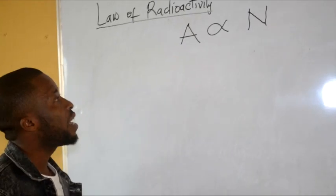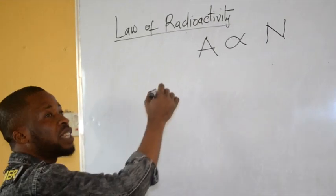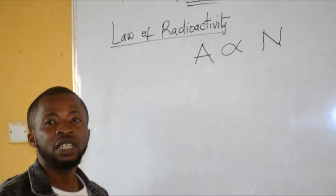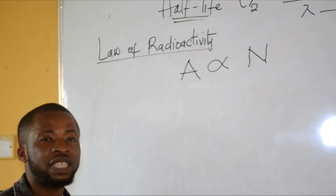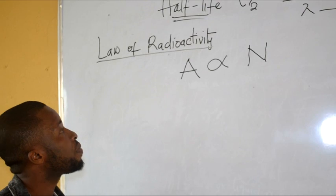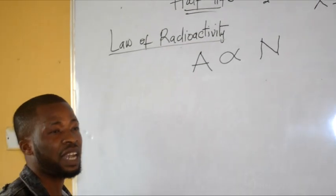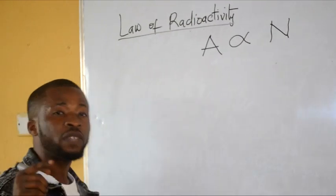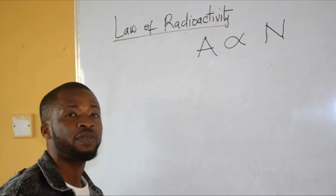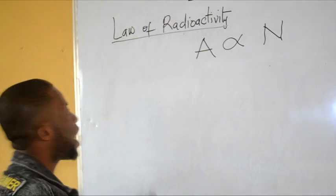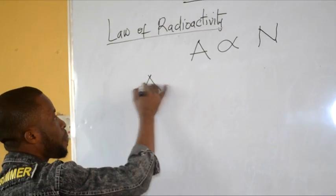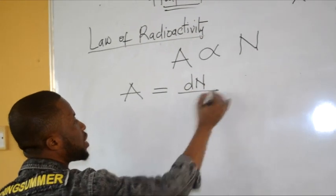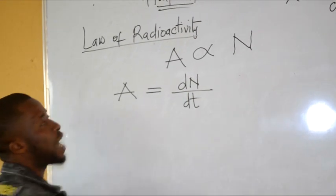What is the meaning of activity? Activity is defined as the number of disintegrations that occur in a particular quantity of a radioactive material, or you could say it is the rate of disintegration of a radioactive substance. Activity is defined using this equation as the change in the number of particles present with respect to time.